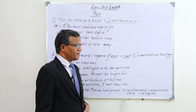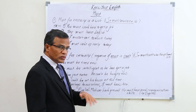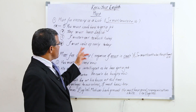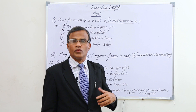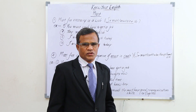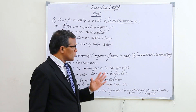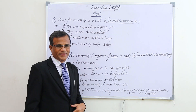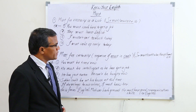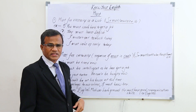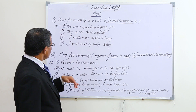We also express wishes with 'must.' For example: 'I mustn't eat too much today' — it's my wish. 'I must wake up early today' — it's my wish to wake up early. So for necessity or a wish, we use 'must' or 'mustn't.'